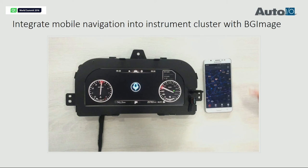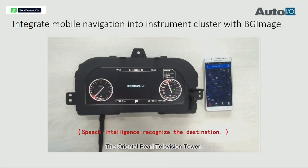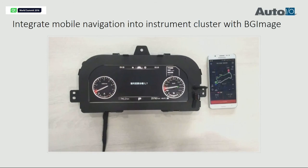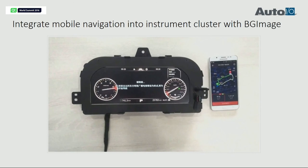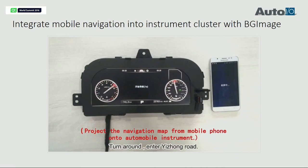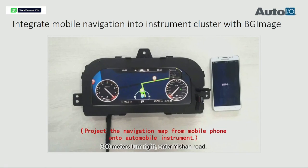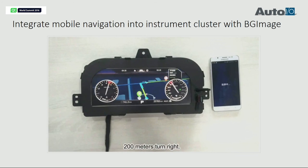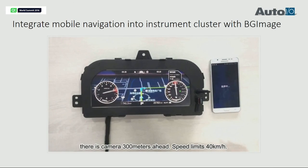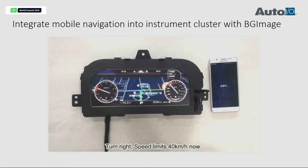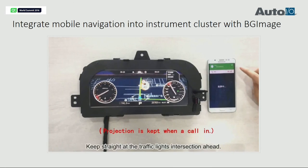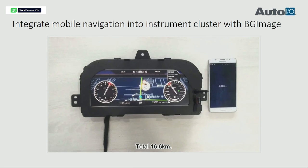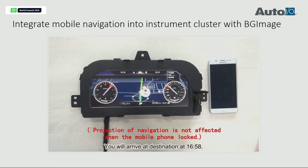Here is another application for the BG image method — an example of mobile navigation integrated into the instrument cluster. The BG image works in frame buffer 0 and the cluster UI is in frame buffer 1.